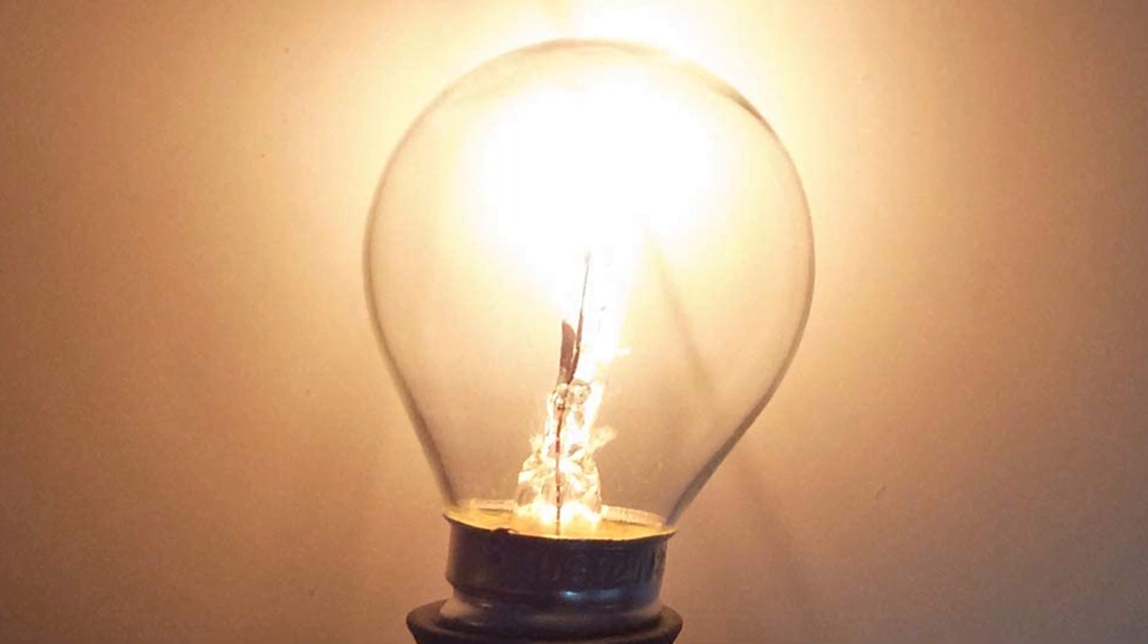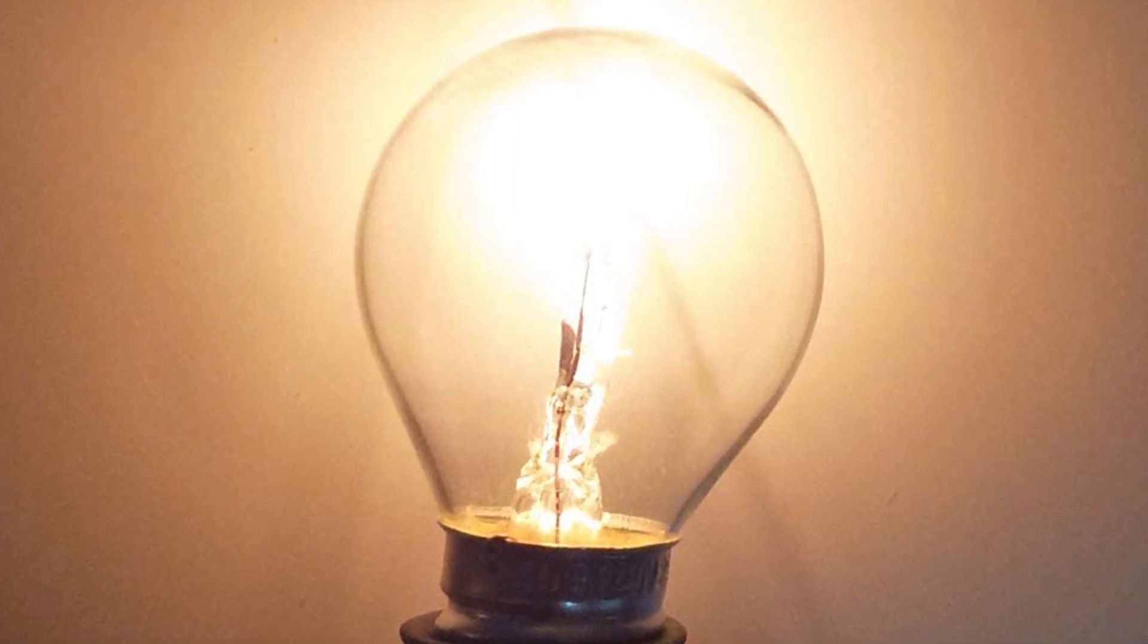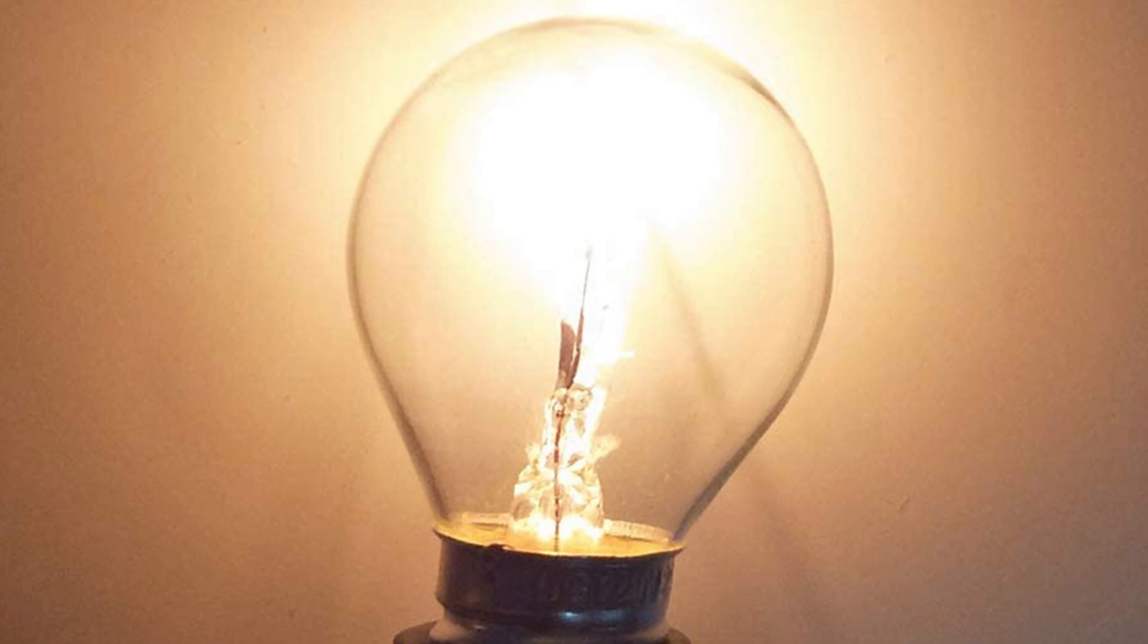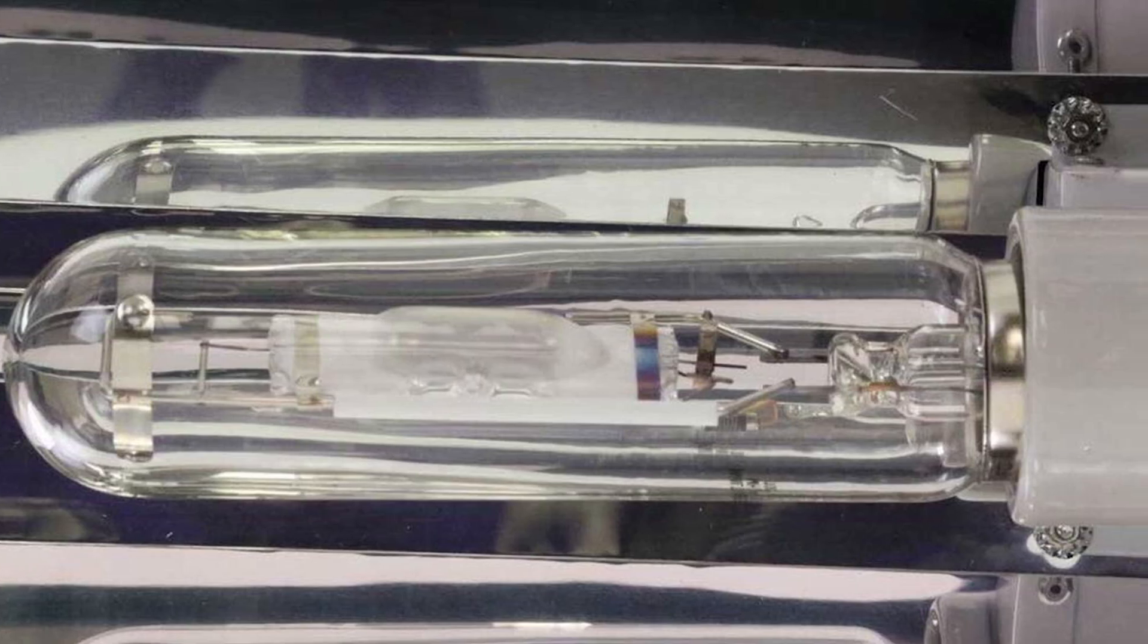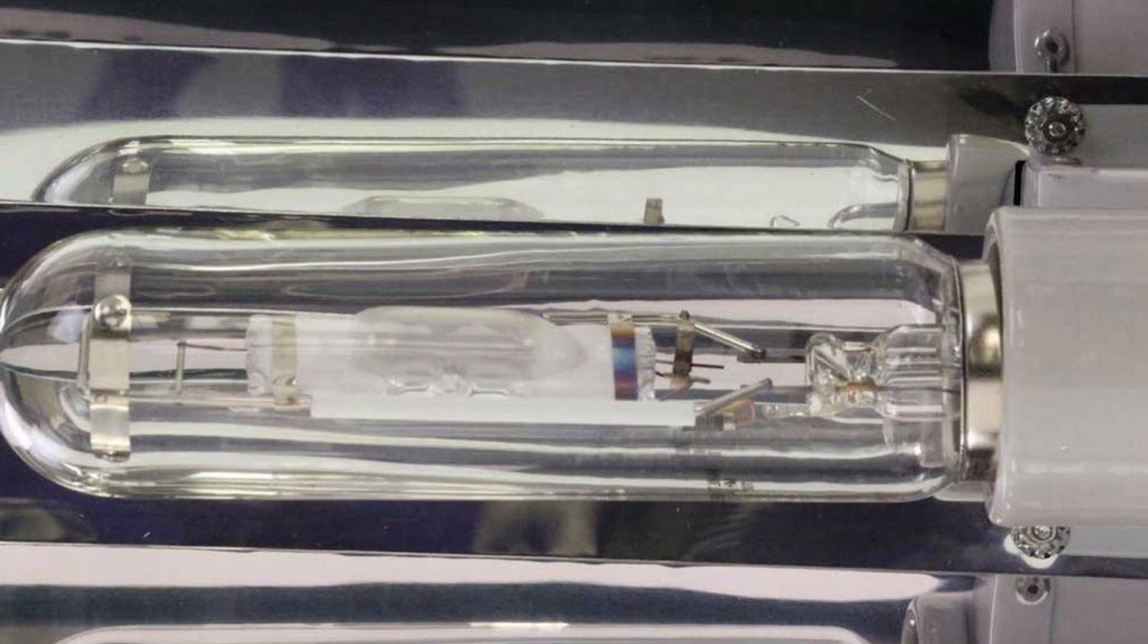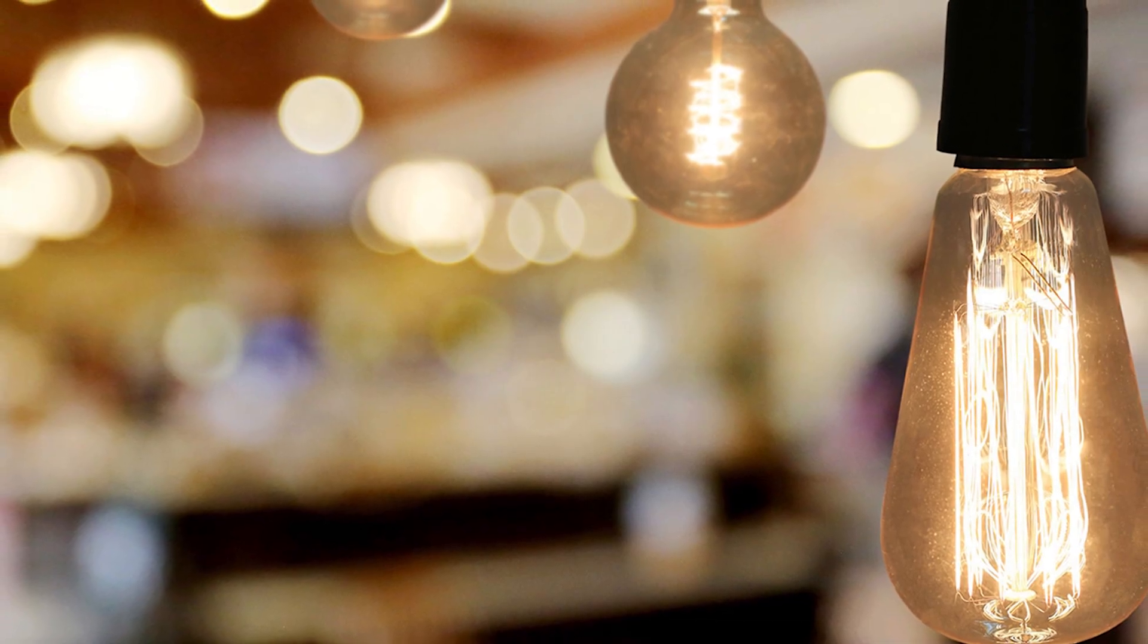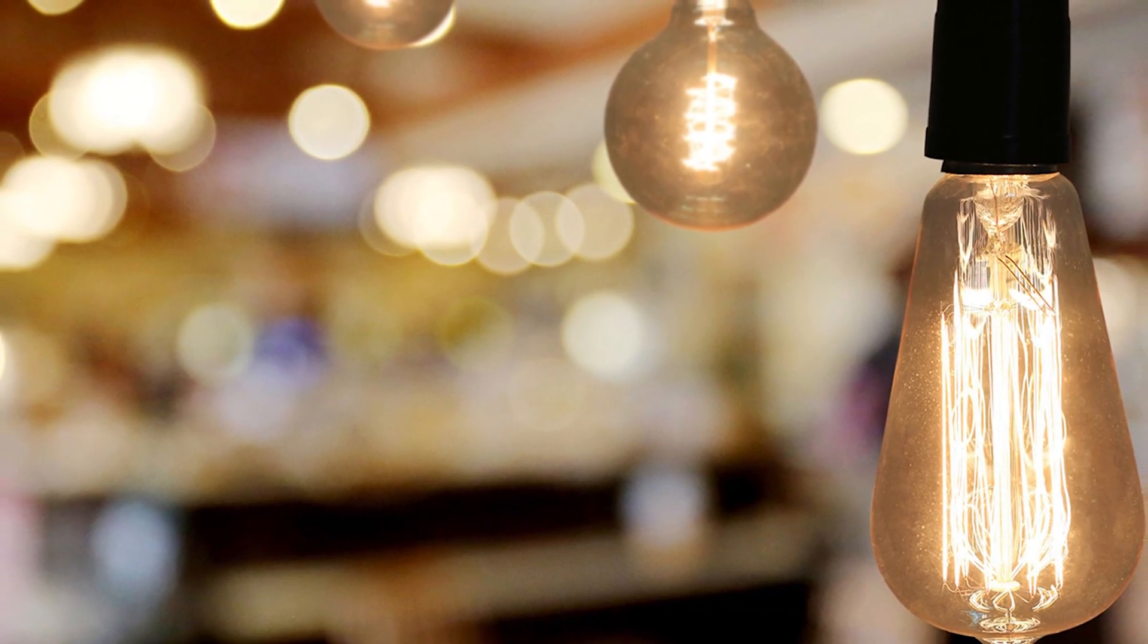Metal halide lights can be dimmed through the use of different electric or magnetic ballast, but the process changes the voltage input to the light and can consequently alter the light characteristics. Generally speaking, metal halide lights are less efficient when run at less than full power. In some cases, dimming can also cause the light to prematurely expire.